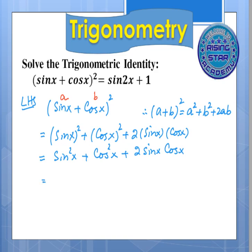We know that sine square x plus cosine square x always equals 1, that is the trigonometric identity, plus 2 sine x cosine x would be written as it is.